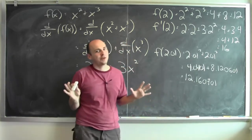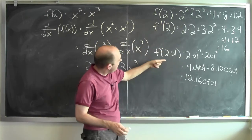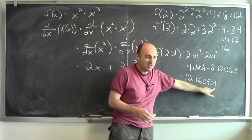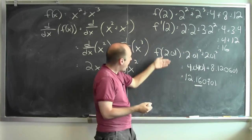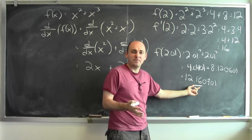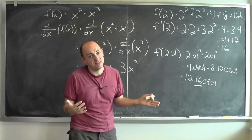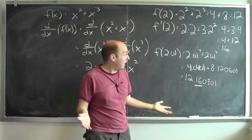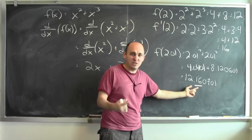Take a look at what just happened. If I plug 2 into the function f, I get 12. If I plug 2.01 into the function f, I get 12.160701. The derivative of f at 2 is 16, and that's exactly reflected here — I wiggled the input up by 0.01, and the output went up by about 16 times as much. The derivative is measuring how an infinitesimal change in the input affects the output infinitesimally. This isn't an infinitesimal change, so it's not exact, but it's close.